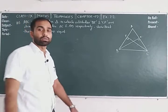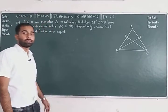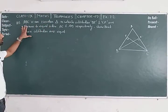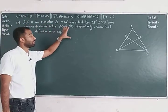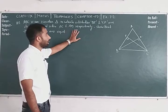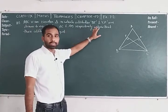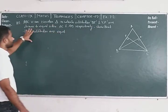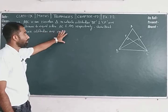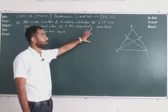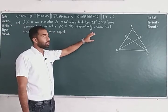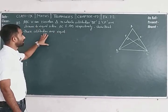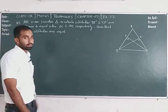Now this is question number 3. Question number 3 says: ABC is an isosceles triangle in which altitudes BE and CF are drawn to equal sides AC and AB respectively. Show that these altitudes are equal.